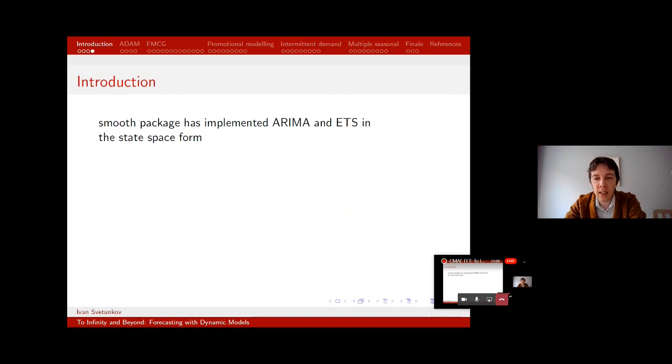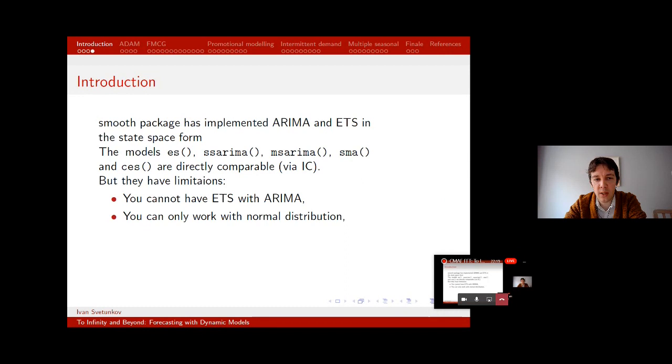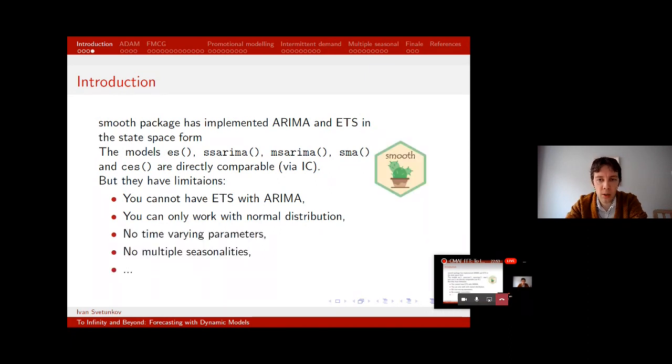Talking seriously, these methods are already implemented in forecast package using different functions. Here they are listed, ES, ARIMA and so on, and they are already directly comparable. But I realized that these functions, these approaches have their limitations. For example, you cannot have ETS and ARIMA. At least not using smooth functions and I don't know of any R functions that would do that. The other thing, you can only work with normal distribution. That's something that every conventional statistical model assumes. But we know that this is a very strong assumption and reality is much more different than just normality and bell curve.